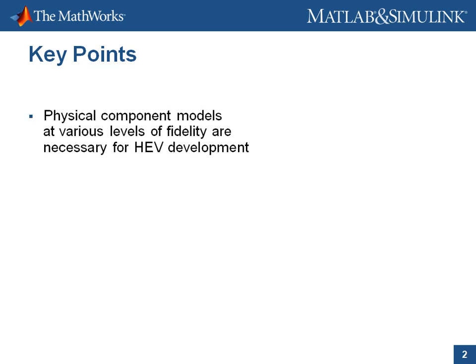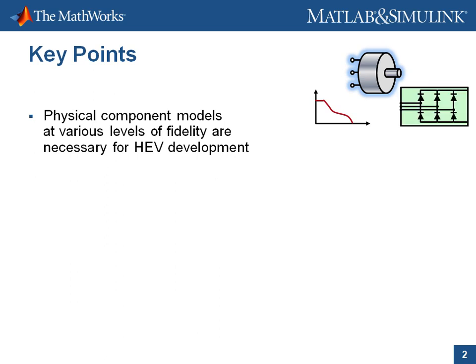Here are the key points to take away from this presentation. First, we're going to see that physical component models at various levels of fidelity are necessary for HEV development. At times we'll need to iterate quickly, using models with less detail but fast simulation speed—for example, using lookup tables for torque-current relationships in motors. At other times, we'll simulate the entire three-phase electrical network with more detailed models including switching dynamics. Balancing model fidelity and simulation speed is critical for efficient development.